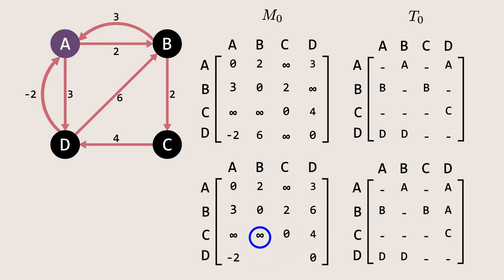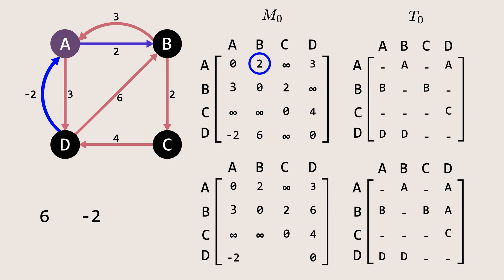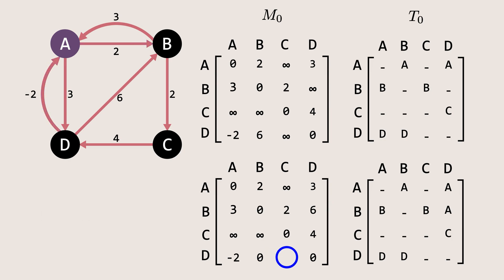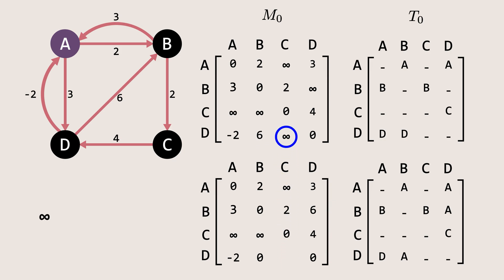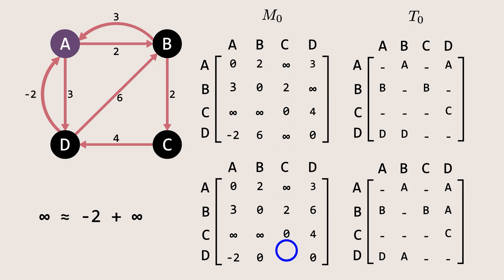Next is the path between D and B. The current shortest path has a cost of 6. However, if we go via A, the cost from D to A is negative 2, and from A to B is 2, giving a total of 0, which is less than the current cost. So we update it to 0 and set the previous node to A, since the path is coming via A. Next is the path from D to C. Currently, the shortest path has a cost of infinity. If we look via A, the cost of going from D to A is negative 2, and from A to C is infinity, meaning there is no path yet, so we will not update it.